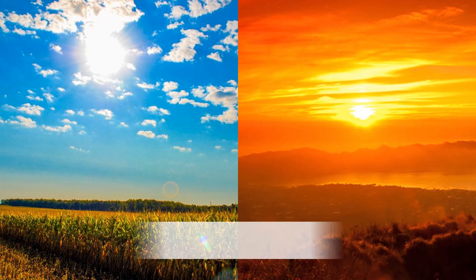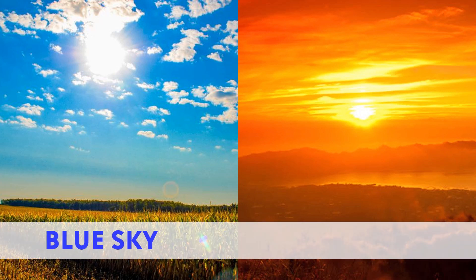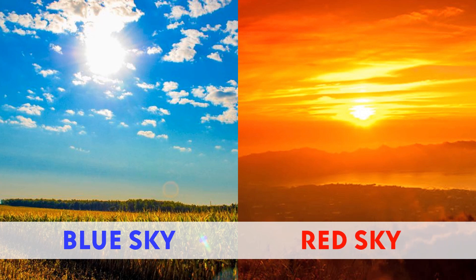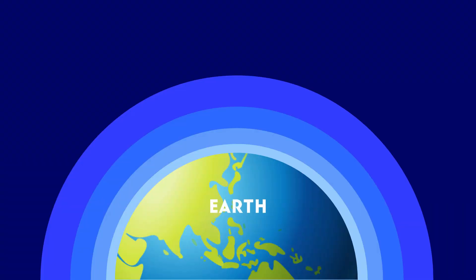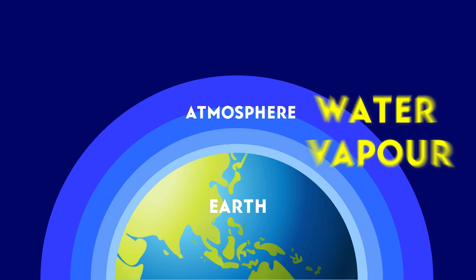Have you ever wondered why the sky looks blue at noon but looks red during sunset and sunrise? The Earth's atmosphere has a layer of air that is made up of gases, dust, water vapor and other particles.